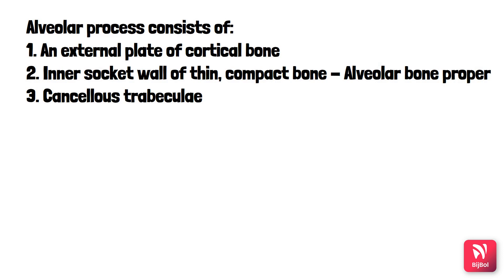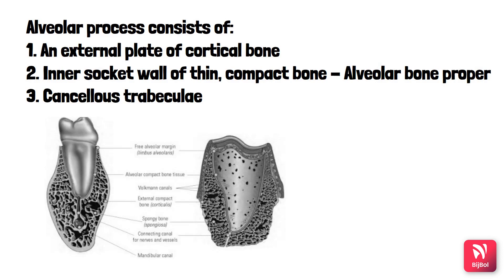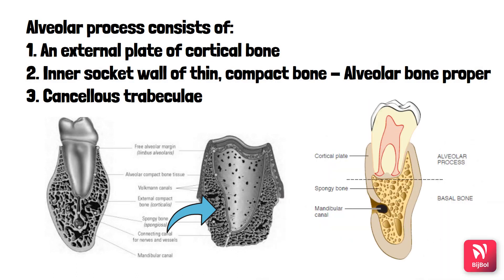The alveolar process consists of an outer plate of cortical bone, whereas the inner socket wall is formed by thin compact bone. Examined radiographically, this thin compact bone — called the alveolar bone proper — is seen as lamina dura on radiographs, whereas histologically it appears as a series of openings called the cribriform plate. Through these openings, neurovascular bundles link the periodontal ligament to the alveolar bone.